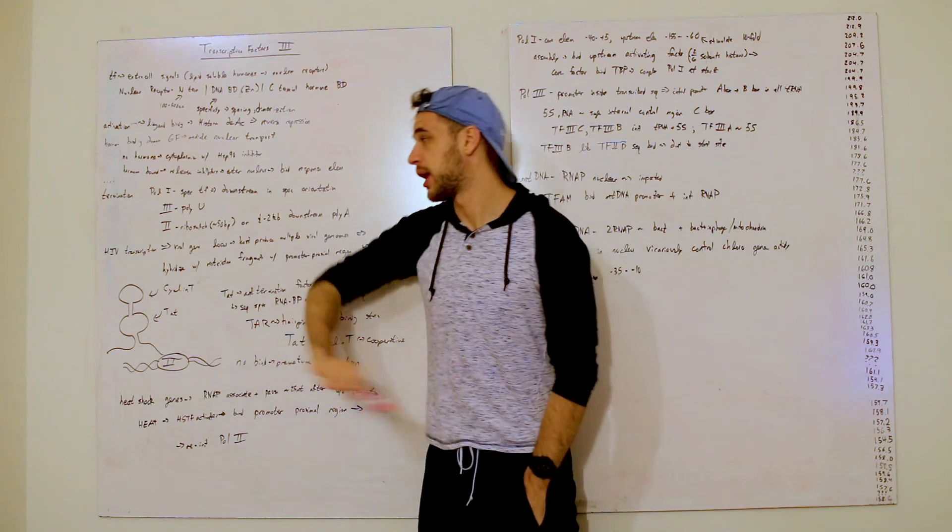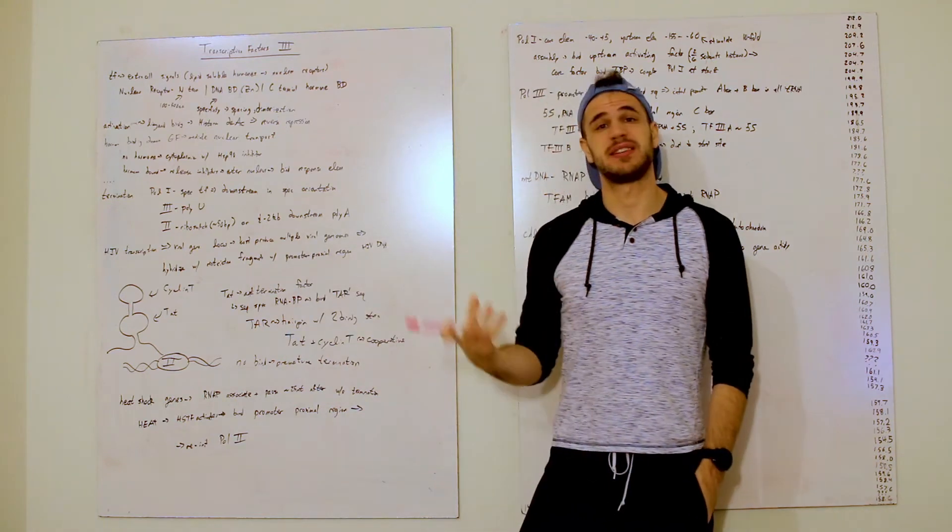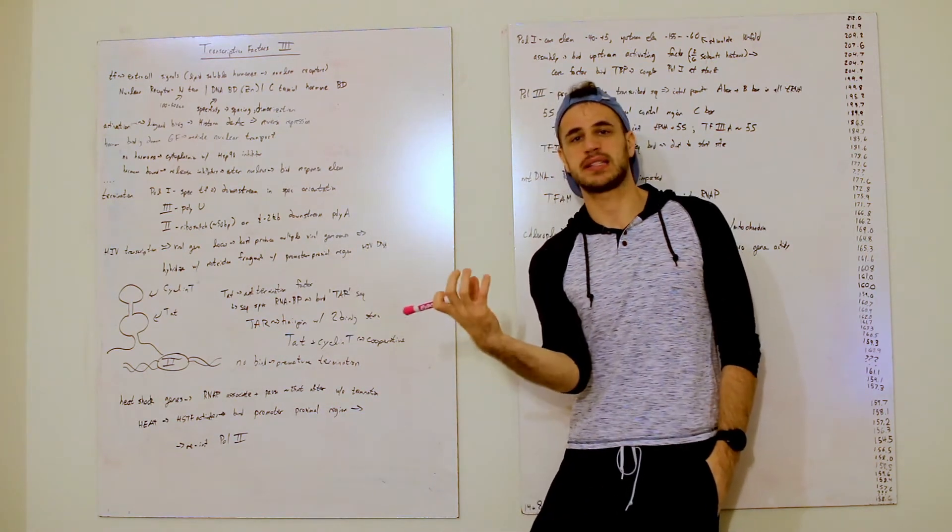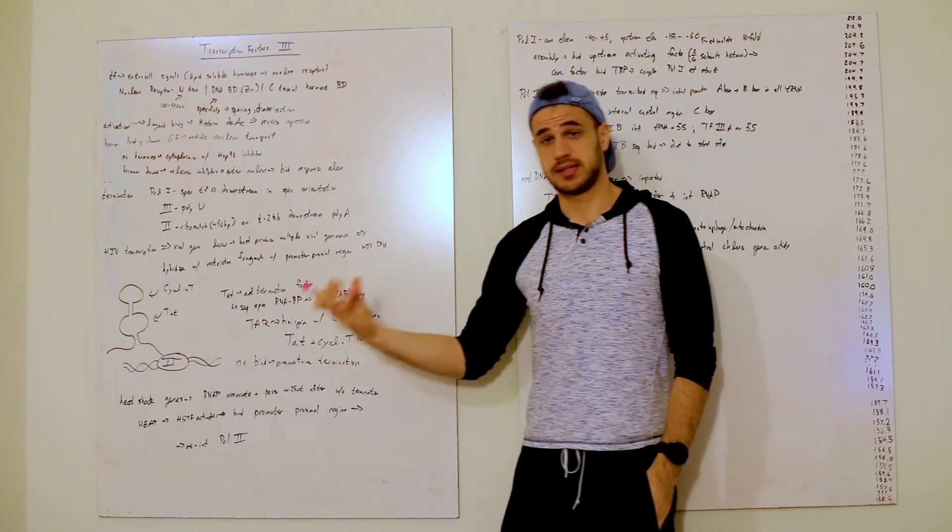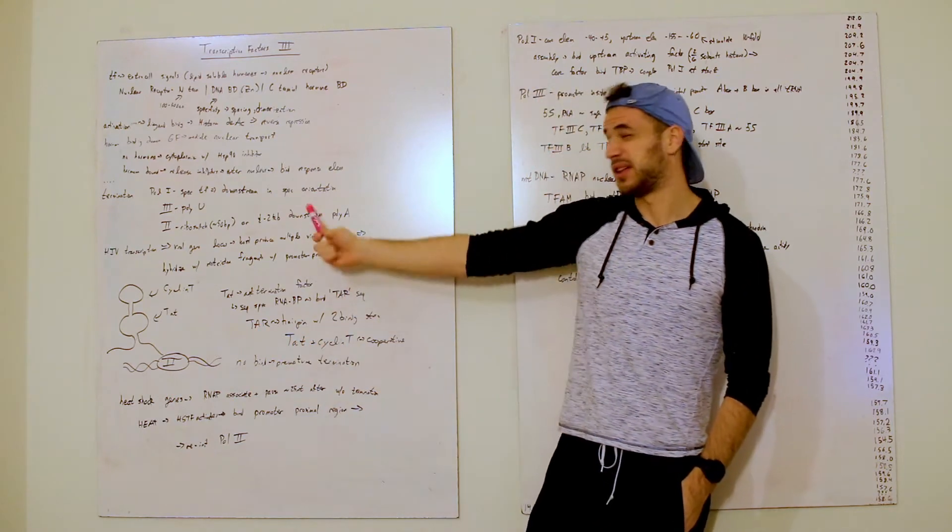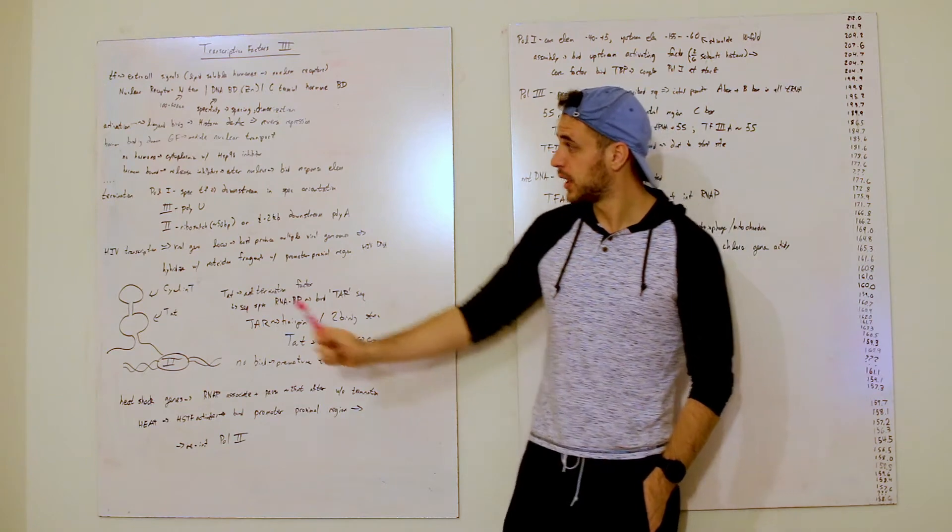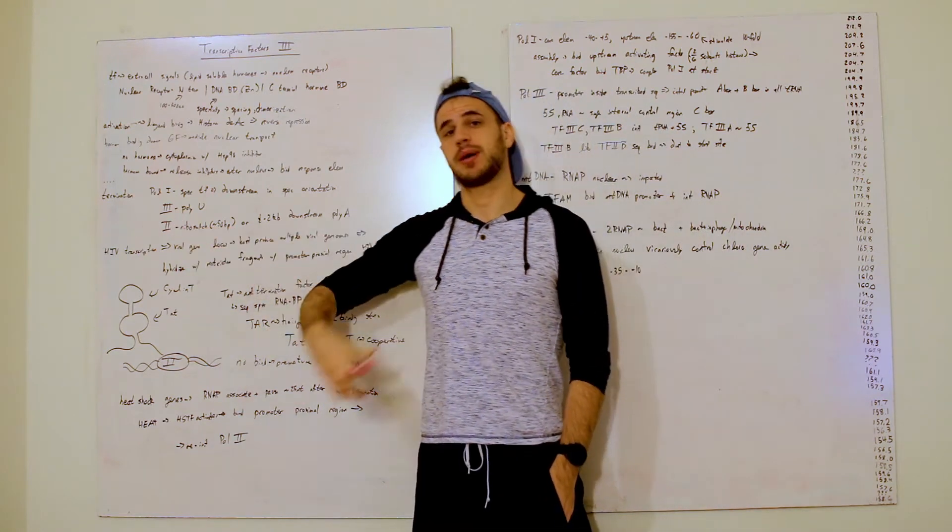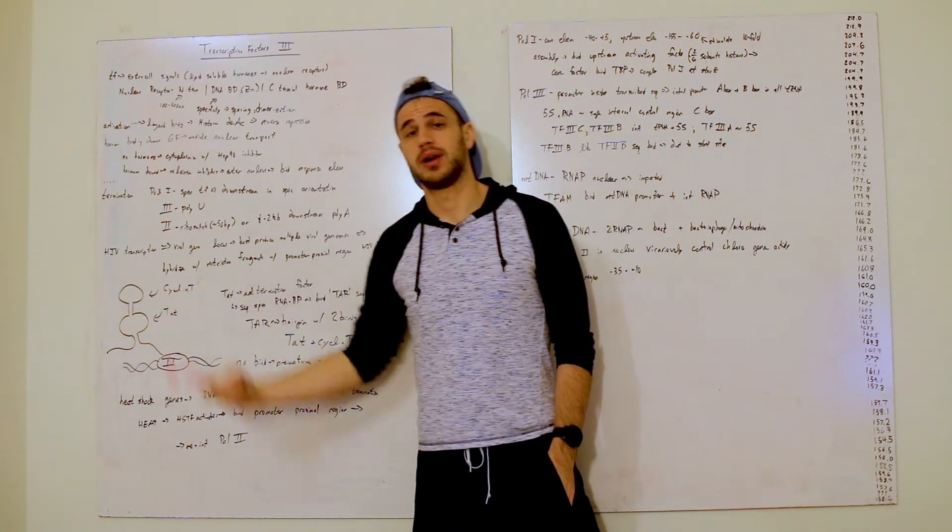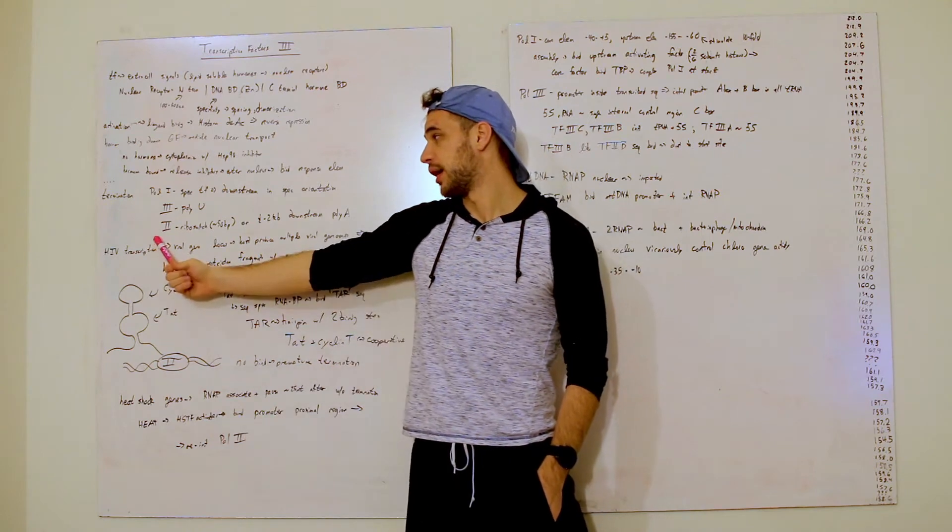So polymerase 1, the rRNA guy, uses a specific termination factor that binds in a very specific orientation and causes the termination itself. It usually binds around 13 base pairs. Then you have polymerase 3, which terminates at a poly-U site.